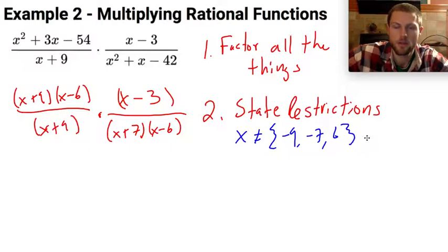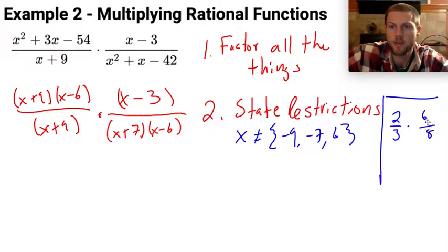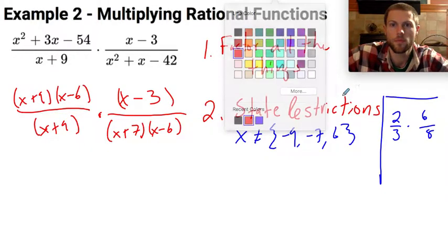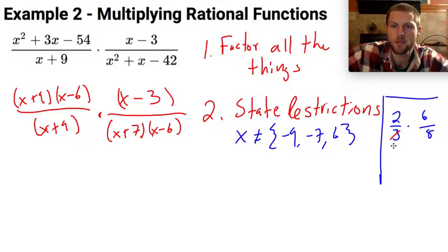Just in the same way that, let's go sidebar over here. If I had 2 thirds times 6 over 8, I could reduce pulling a 3 out of this denominator to make that a 1 and a 3 out of this numerator to make that a 2. I could pull a 2 out of this denominator to make that a 4 and a 2 out of this numerator to make that a 1.